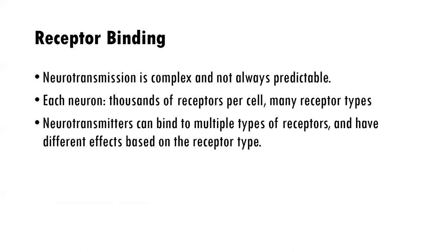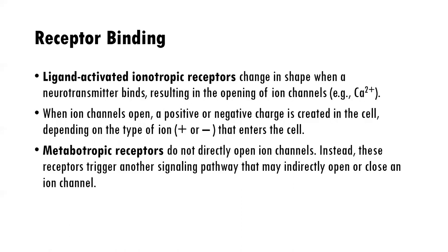Neurotransmission is a complex and not always predictable process, because each neuron has thousands of receptors per cell and many receptor types. Neurotransmitters can bind to multiple types of receptors and also have different effects based on receptor type. There are two major types of receptors: ligand-activated ionotropic receptors and metabotropic receptors — these do different things.